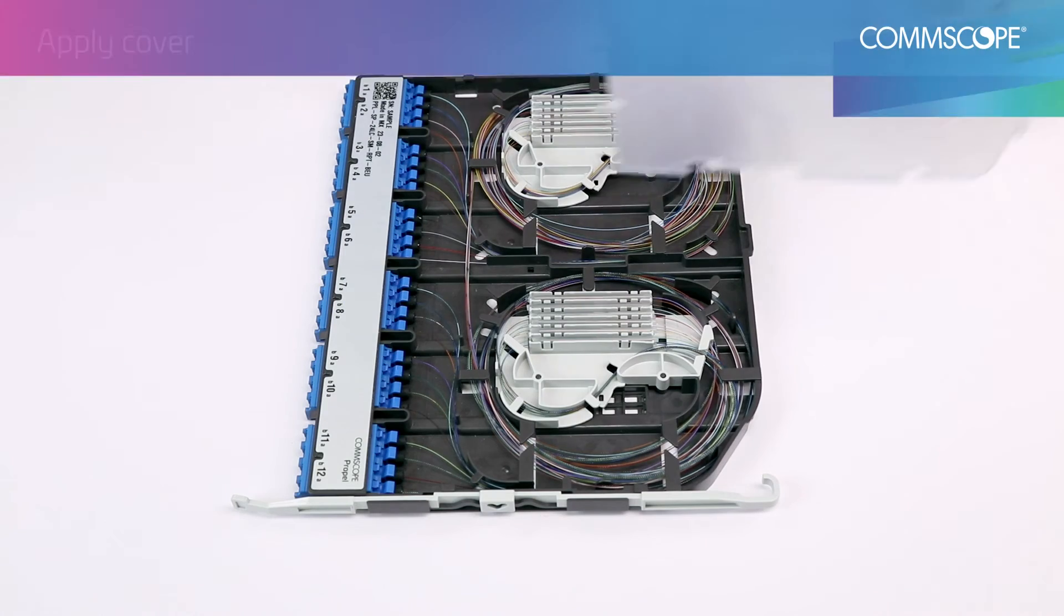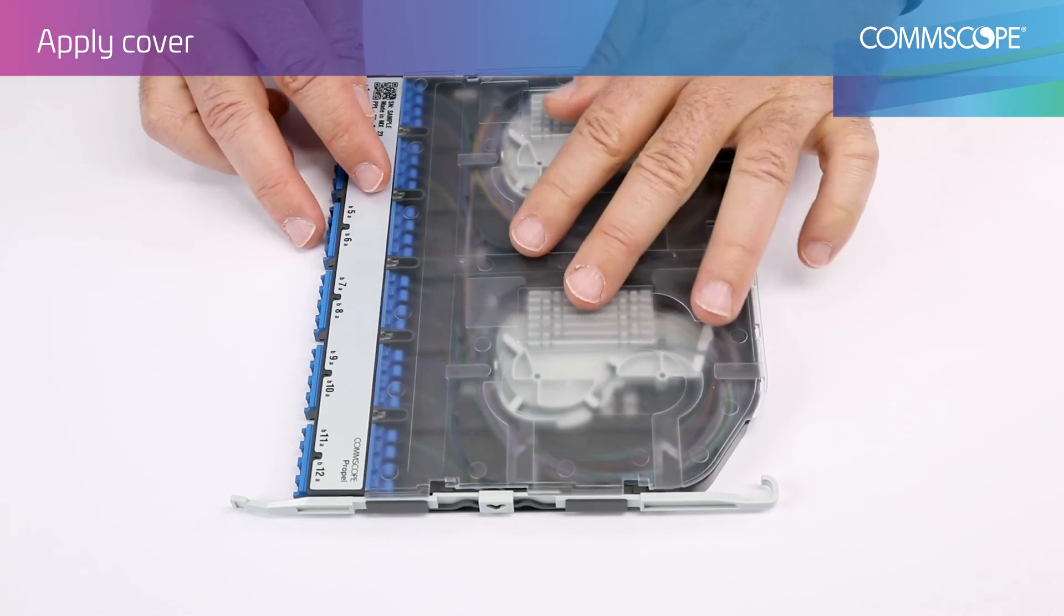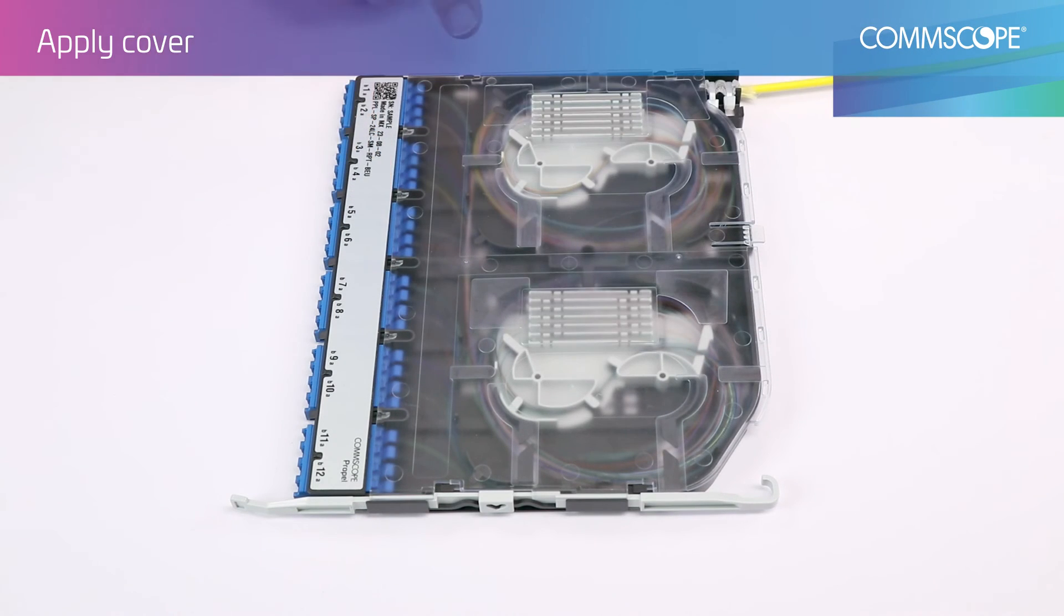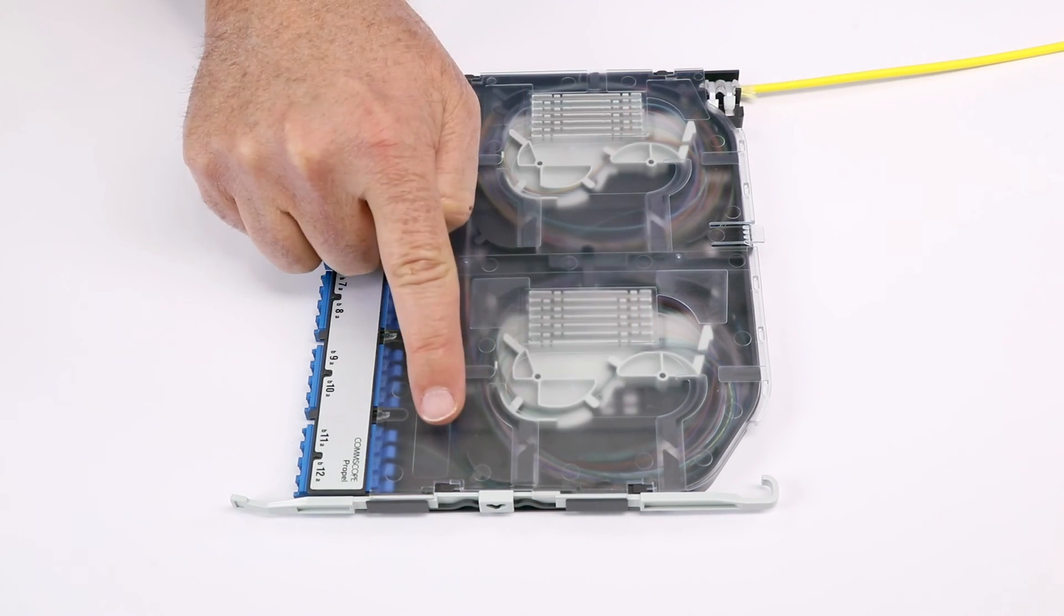Line the cover with the slots near the front of the cassette base, then lay the cover flat on the base and ensure all the tabs on the side of the cover and base are lined up.